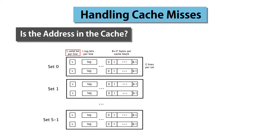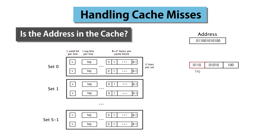Associated with each line is a valid bit, indicating whether the data in that line are reliable or not. We can ignore any line for which the valid bit is 0. There is additionally a tag field, which is just a fixed-length bit string. For concreteness, let's assume that addresses in our system are 12 bits long. Our cache must be designed for these 12-bit addresses. Here's a sample address for this system. When determining whether this address is stored in the cache, we break the address into three fields: the tag field, the set index, and the block offset. In this case, the tag field is 4 bits, the set index is 5 bits, and the block offset is 3 bits.